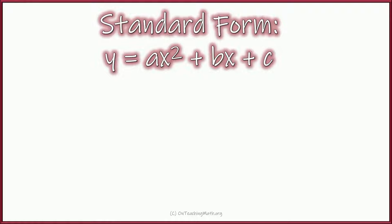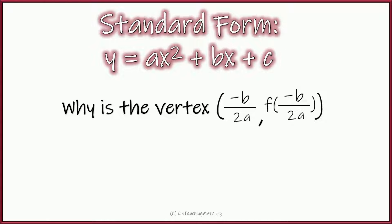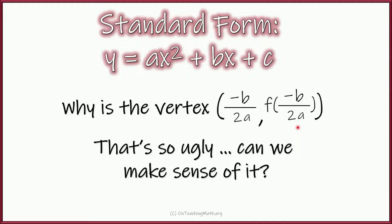Standard form is y equals ax squared plus bx plus c. And this is the formula: negative b over 2a, and f of negative b over 2a. That's a coordinate — x comma y. How does that work? Where does it come from? It's pretty ugly. Can we visualize it? Can we see where it comes from? That's what we're going to do in this video.